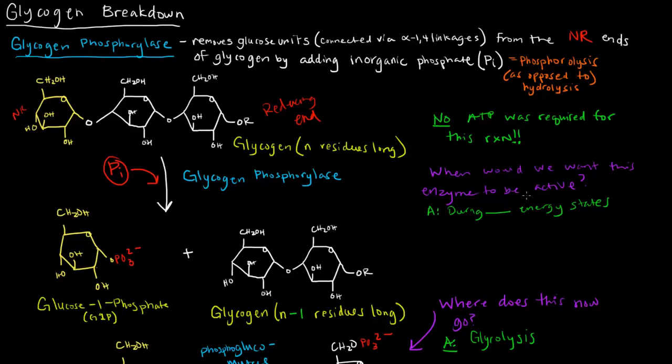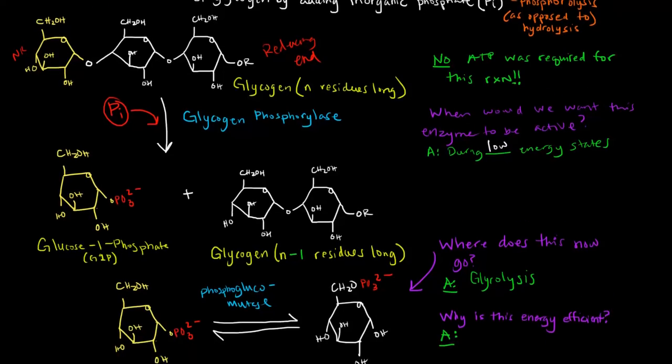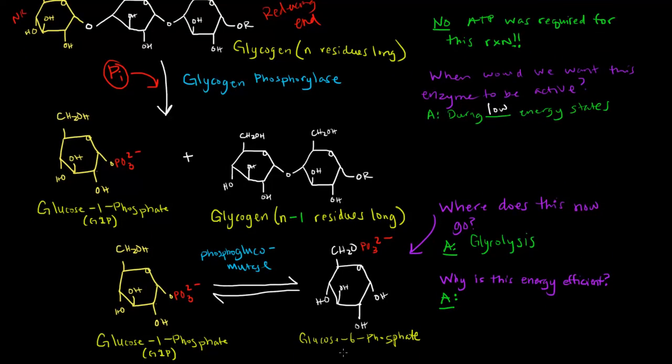When we want this enzyme to be active, we'd want it to be active in low energy states because what this is going to do is free up a glucose that we can use to break down for some ATP. So that's why we actually have this glucose 1-phosphate converted into the glucose 6-phosphate to go to glycolysis.